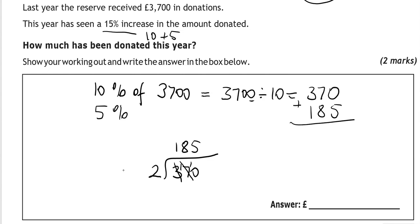So we're going to add them two together. 10% and 5% makes 15%. So 5 and 0 is 5. 7 and 8 is 15. So 5 down and 1 carry it over. 3 and 1 is 4, and another 1 is 5. So £555 increase.